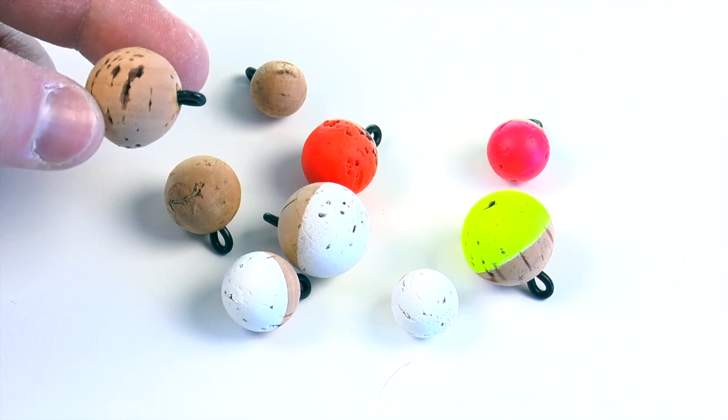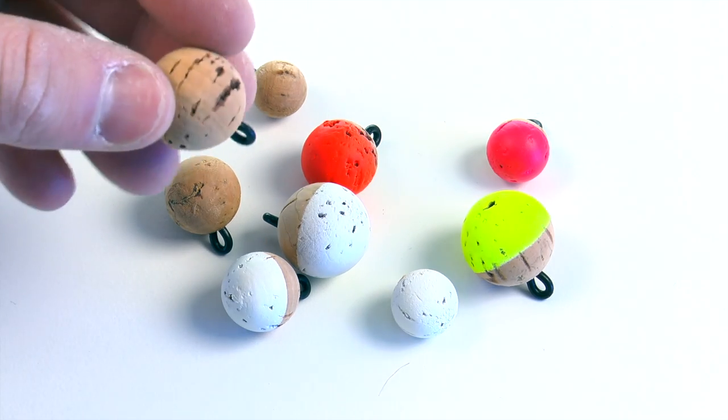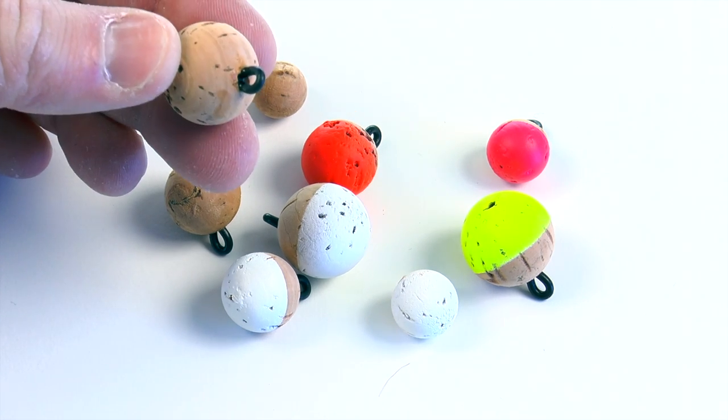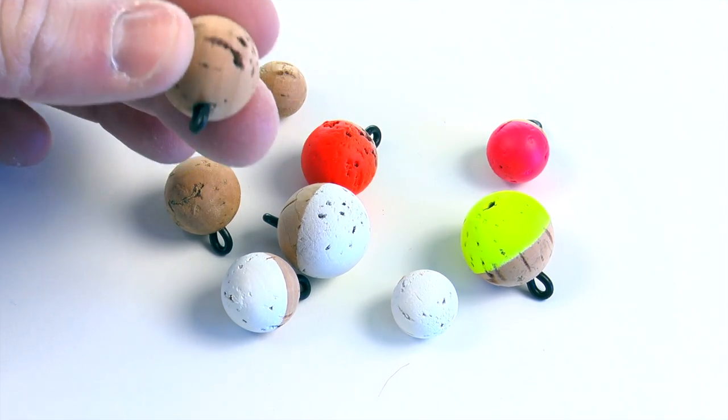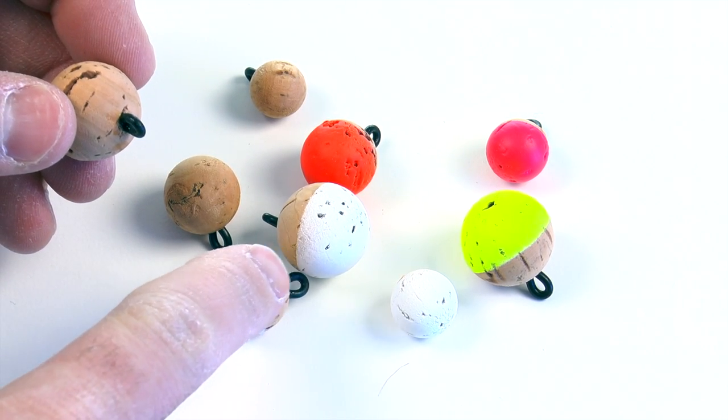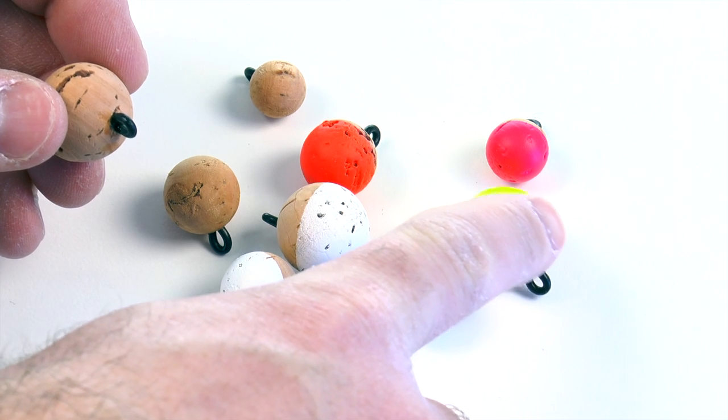They come in a couple different flavors here. They come in the all-natural, which is actually one of my favorites. It just looks like a piece of wood floating down the river, but you can still see it because it's that dark tan color. You also have two other colors: white colors and neon colors.